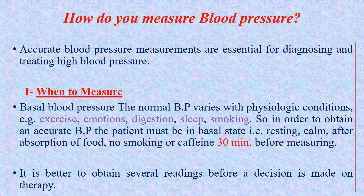The patient must be resting and calm, after absorption of food, for the measurement to be accurate. To properly assess the patient, you must take multiple readings and then determine the average. You also need to measure in both arms before making a decision about hypertension and prescribing antihypertensive therapy.